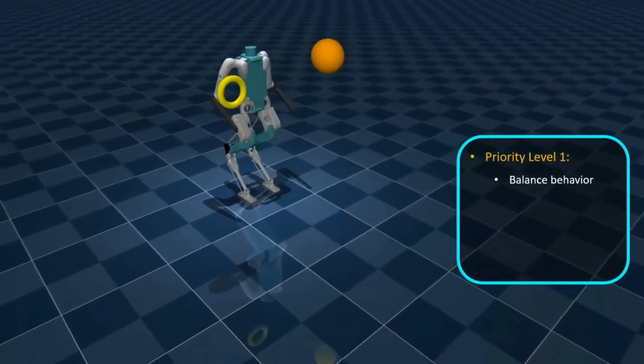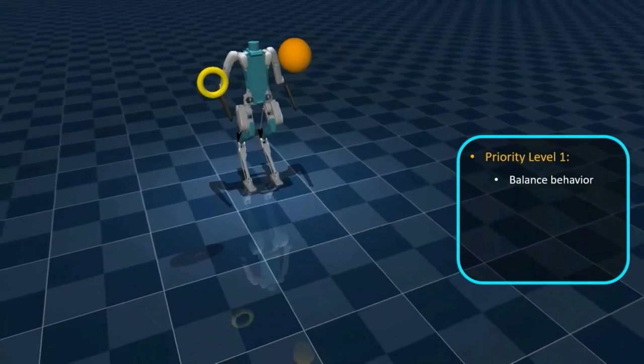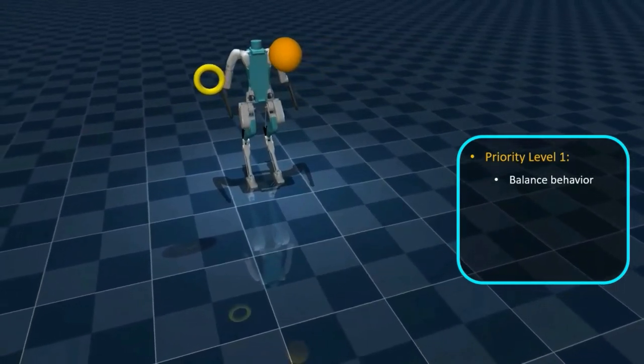The balance behaviour, which is the highest priority behaviour, ensures that the robot does not fall down while accomplishing the task.